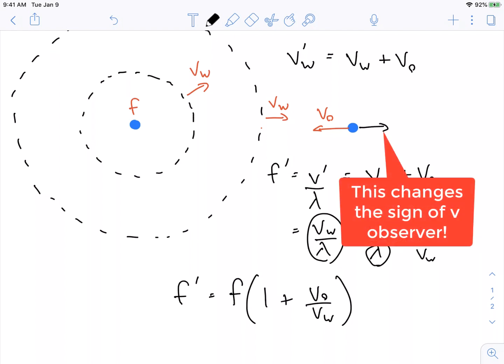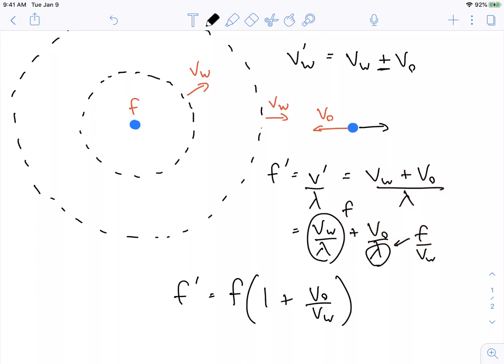What happens if the velocity of the observer is going the other way? Well, there's a negative sign, and it propagates through the equation. So let's take a look at this formula.